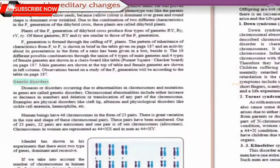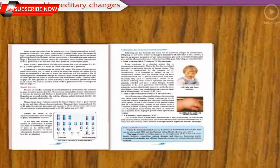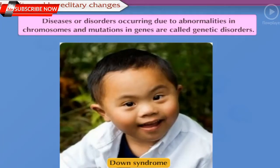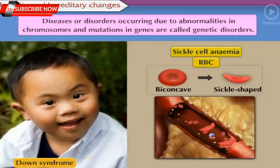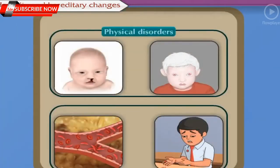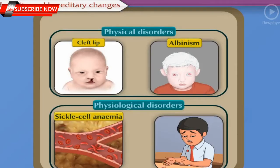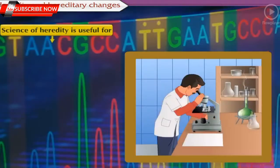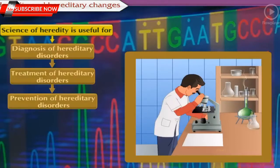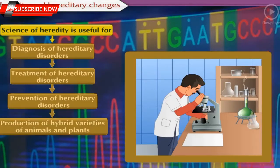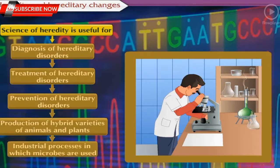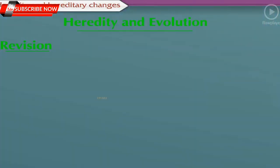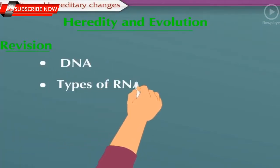We have already studied about genetic disorders in our previous grade. Diseases or disorders occurring due to abnormalities in chromosomes and mutations in genes are called genetic disorders. Physical disorders like cleft lip, albinism and physiological disorders like sickle cell anemia and hemophilia are some examples of genetic disorders. The science of heredity is useful for diagnosis, treatment and prevention of hereditary disorders, production of hybrid varieties of animals and plants, and in industrial processes in which microbes are used. To have a better understanding about the next part of the chapter, we need to revise about DNA and various types of RNA studied in our previous grade.